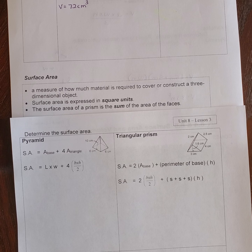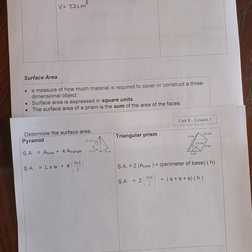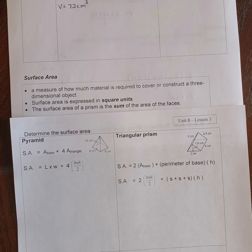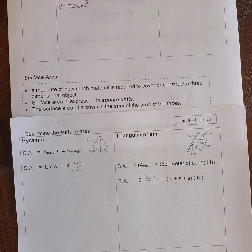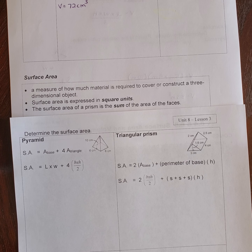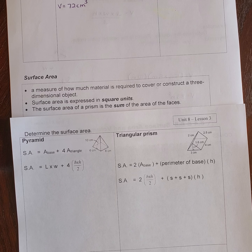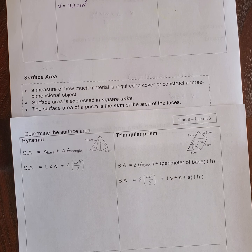Surface area is a measure of how much material is required to cover or construct a three-dimensional object. Surface area is expressed in square units. Even though we're talking about a three-dimensional shape, we're not talking about the space it takes — we're talking about how we would construct it. You calculate the area of all the sides and add them up, so your units should be squared, like centimeters squared or meters squared, depending on your dimensions.